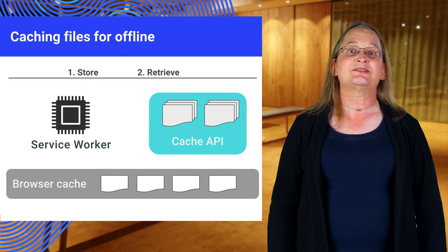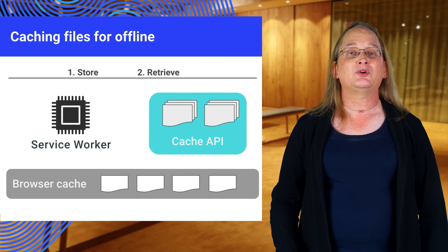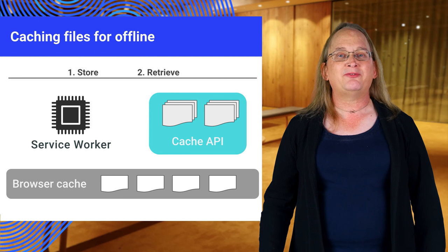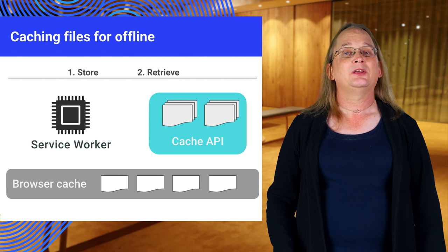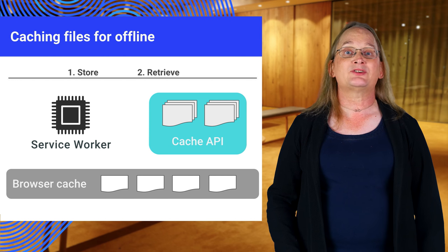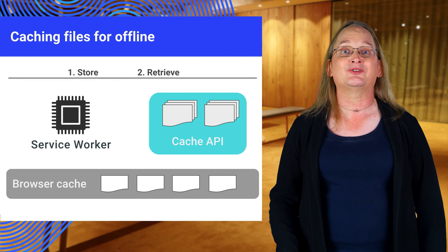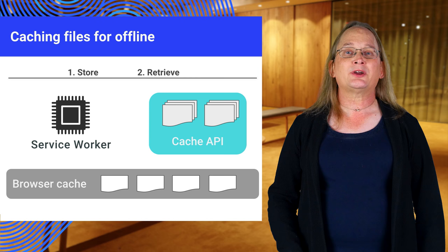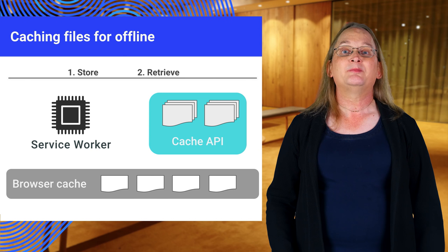So how can we make an existing site work offline? You could depend on the browser cache, but it fails if the browser is offline. You might use the older app cache, but it has trouble with file updates and redirections. The service worker was designed to address these problems.